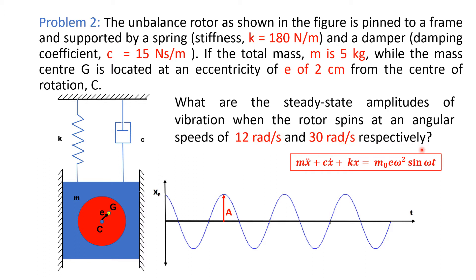For this type of rotating unbalanced system, the differential equation is of the type: Mẍ + Cẋ + Kx = M₀eω²sin(ωt), where Mẍ is the inertia force, Cẋ is the damping force, Kx is the spring force, and M₀eω²sin(ωt) is the vertical component of the centrifugal force and is the external excitation.